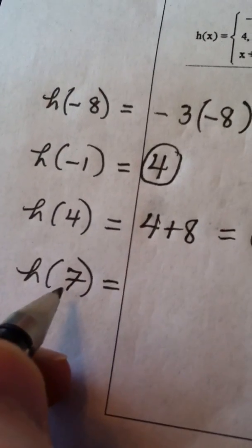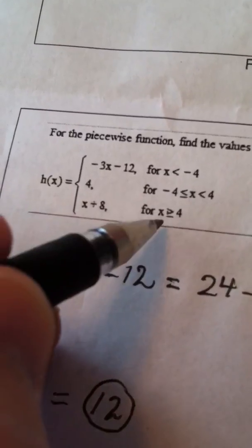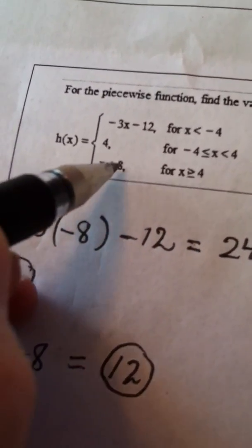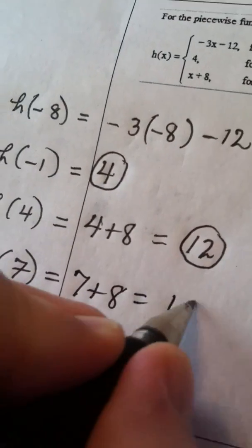And h of 7. Well, 7 is in the bottom tier because 7 is greater than or equal to 4. So we take 7 and add 8 to it. And we get the answer 15.